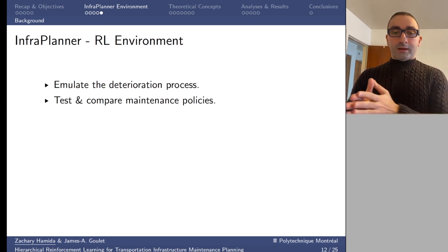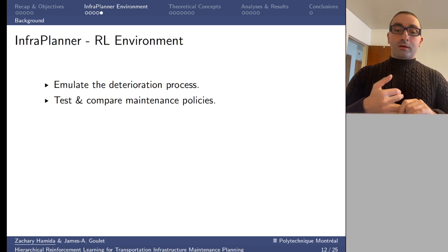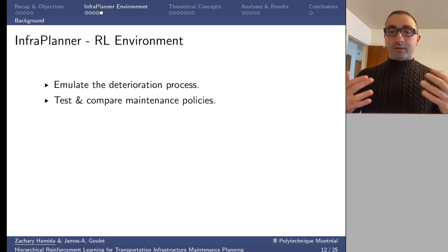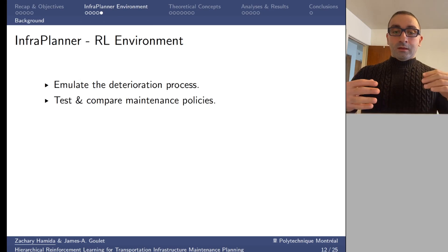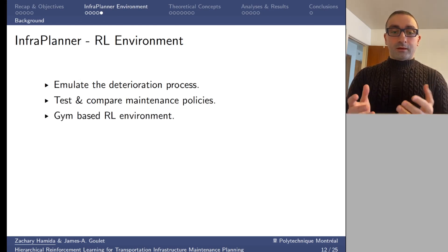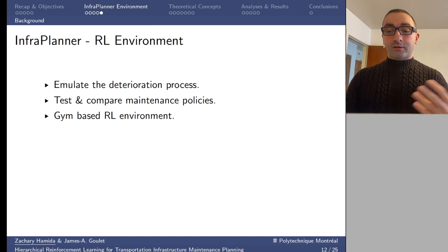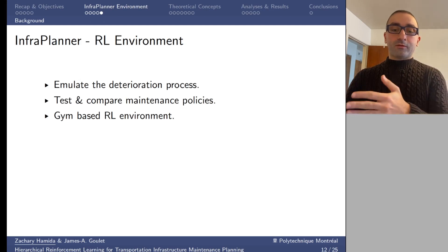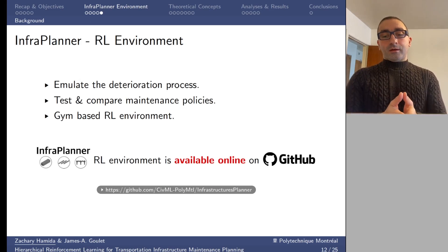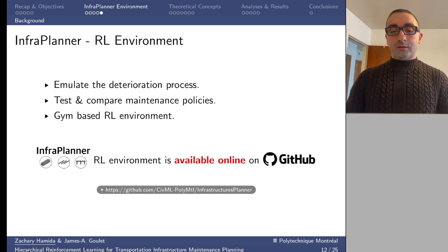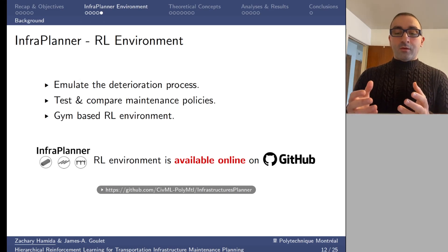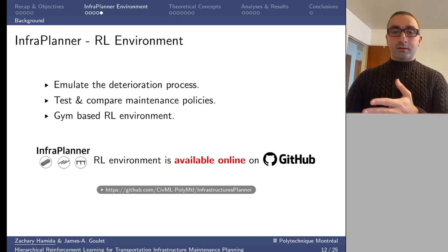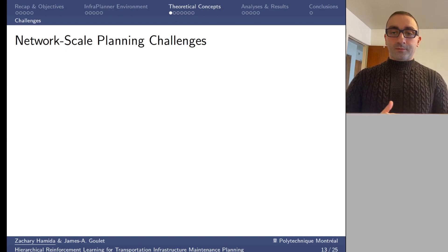All these developments, along with others, are encapsulated within this environment: we can emulate deterioration at the element level, structural category level (beams, slabs, etc.), and bridge level, with the ability to test and compare maintenance policies. InfraPlanner is developed as a standard gym-based RL environment and is available online on GitHub. This environment provides the foundations for developing and testing decision-making frameworks.